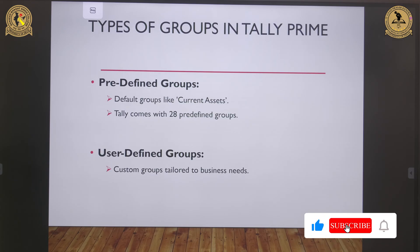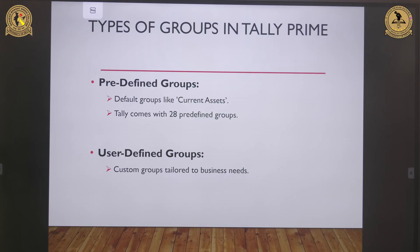There are two types of groups in Tally Prime: predefined groups and user-defined groups. Predefined groups are the default groups provided by Tally. For example, current assets and sundry current assets — these are all examples of predefined groups and are very basic to any financial categorization. In Tally Prime, there are 28 predefined groups that already exist.